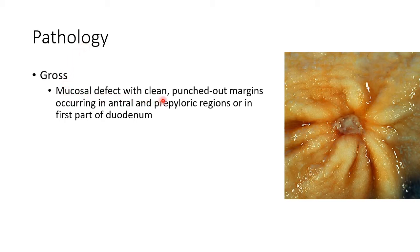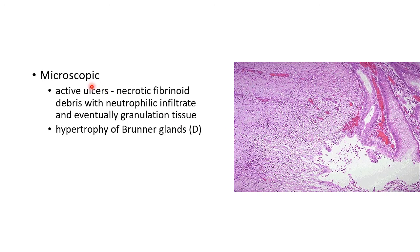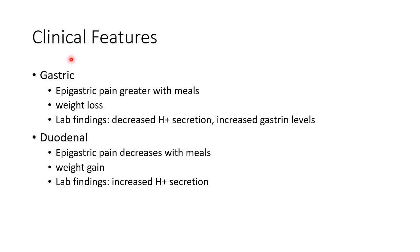Regarding the pathology of peptic ulcer disease, broadly there will be a mucosal defect with clean punched-out margins occurring in the antral and prepyloric regions or in the first part of the duodenum. This picture shows a gross specimen of peptic ulcer disease. Microscopically, in case of active ulcers, there will be necrotic fibrinoid debris with neutrophilic infiltrate, and eventually there will be granulation tissue. In the case of duodenal ulcer, there will be hypertrophy of Brunner's glands.